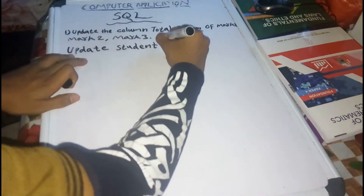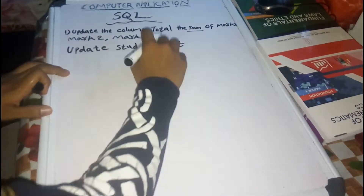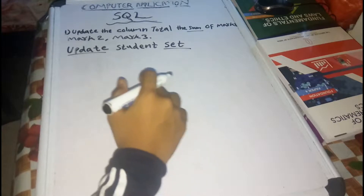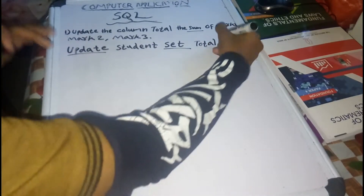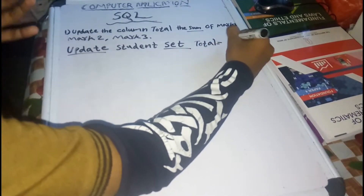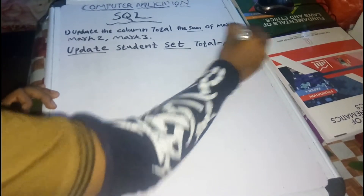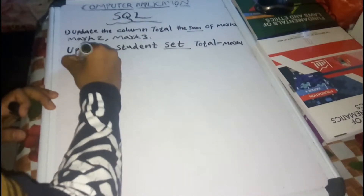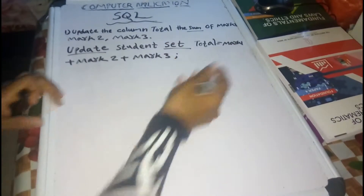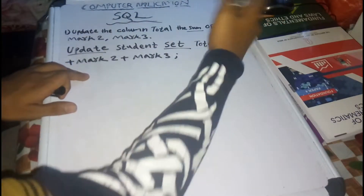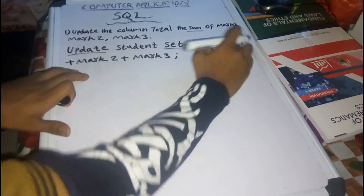UPDATE student SET — so UPDATE student SET total. Update the total: total is equal to mark1 plus mark2 plus mark3. That gives the full mark.